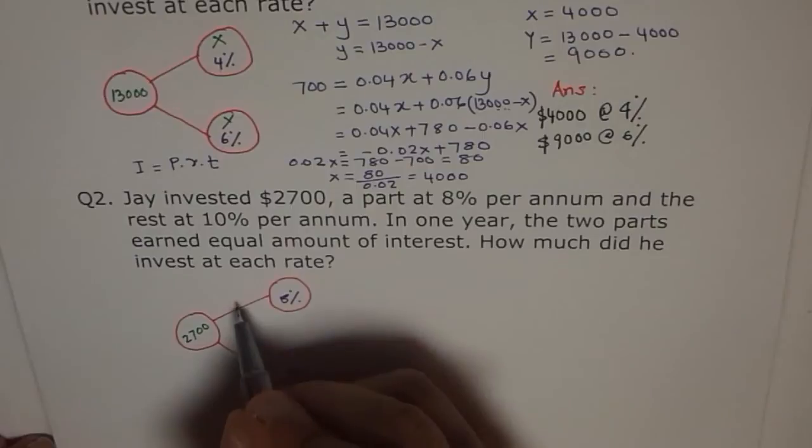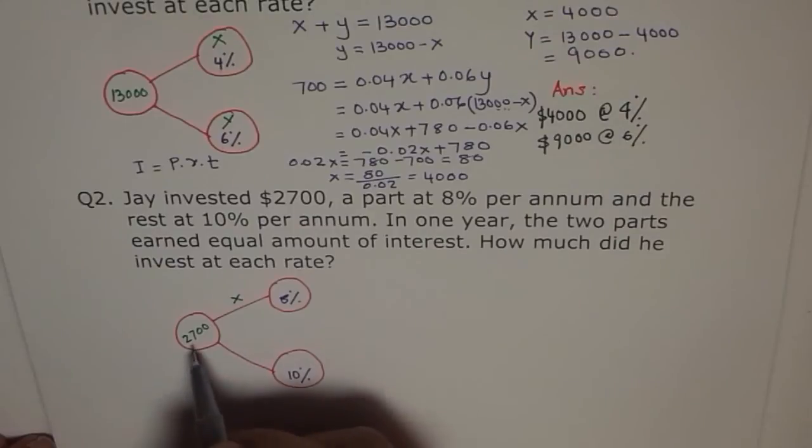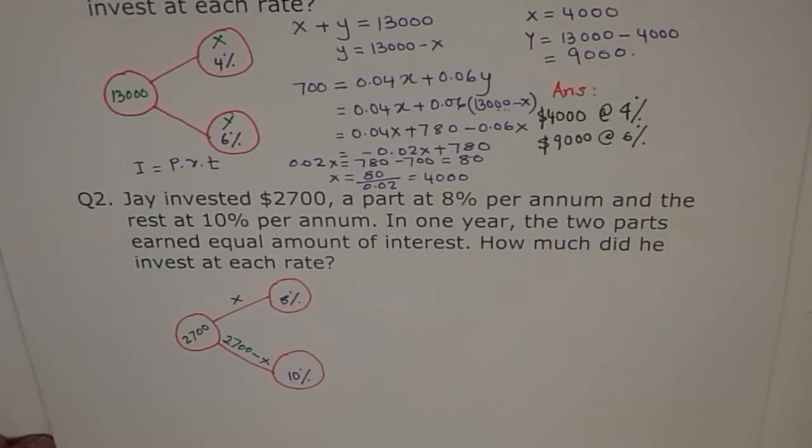Now, let's say we invest X here. Then, how much will be here? You could write Y. And then, X plus Y is this much. And then, you say Y is this much minus X. What we'll do straight? We'll say $2,700 minus X. In decimal.